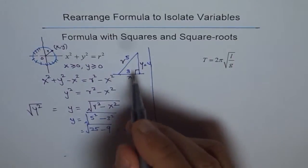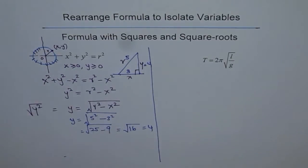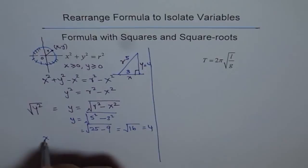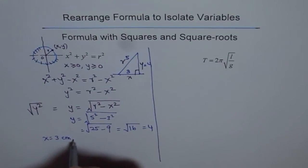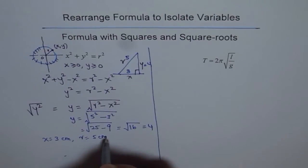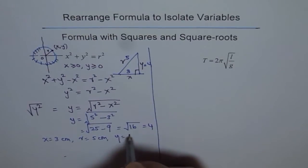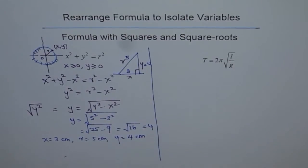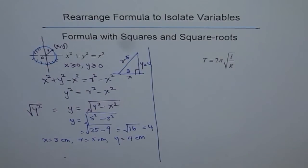If all units are in centimeters, then y is 4 centimeters. So if x = 3 cm and r = 5 cm, then y = 4 cm. That is how we can use this formula. It is a very helpful and useful formula.